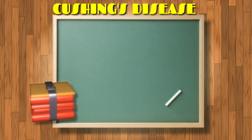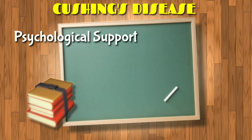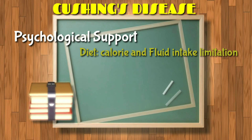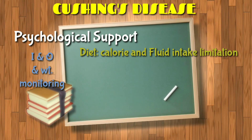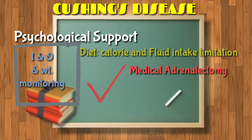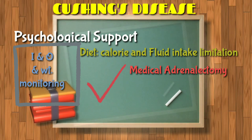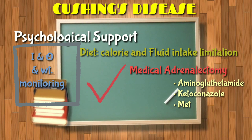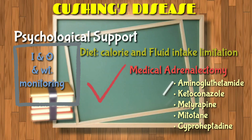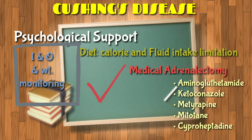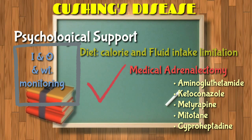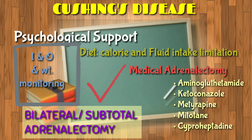While in Cushing's disease, nursing care includes psychological support, and most importantly, limiting caloric and fluid intake of the patient. The patient's intake and output and weight must always be monitored. You can provide medical adrenalectomy, which suppresses steroid function. Examples include aminoglutethimide, which inhibits cholesterol synthesis; ketoconazole, which also inhibits cholesterol synthesis; metyrapone, which inhibits adrenal cortex steroid synthesis; and more. If the condition is overwhelming, a surgical intervention is required, which can be a bilateral or subtotal adrenalectomy.